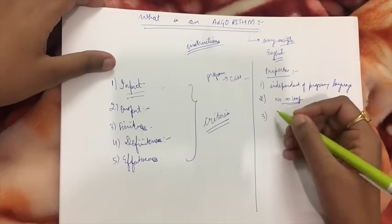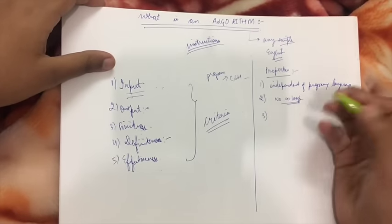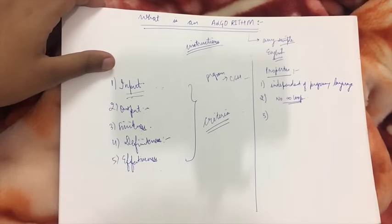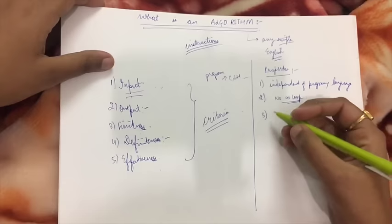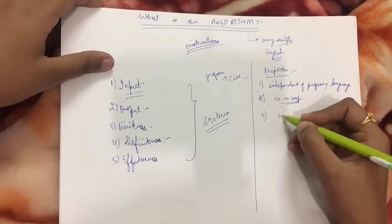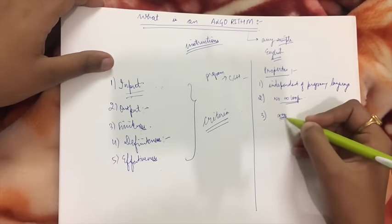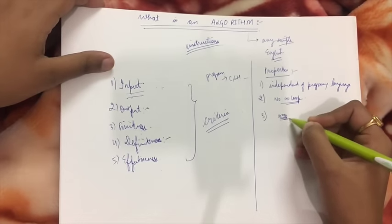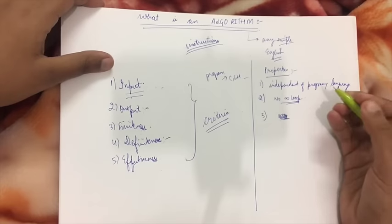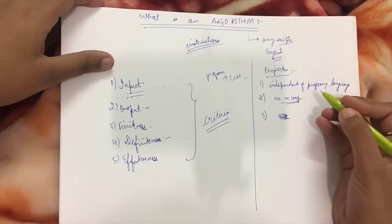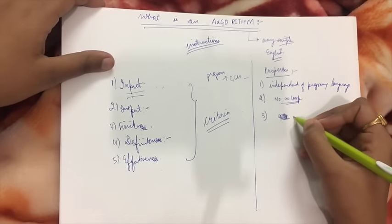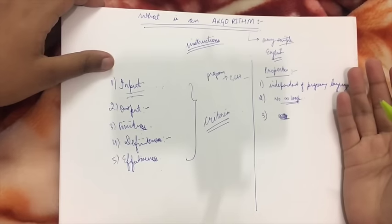The third property is that instructions in algorithms must include arithmetic, logical, and control transfer operations. Arithmetic operations like A plus B, any mathematical operations; logical operations like logical OR, logical AND; and control transfer like switch, break statement, goto - all these statements must be included in an algorithm.